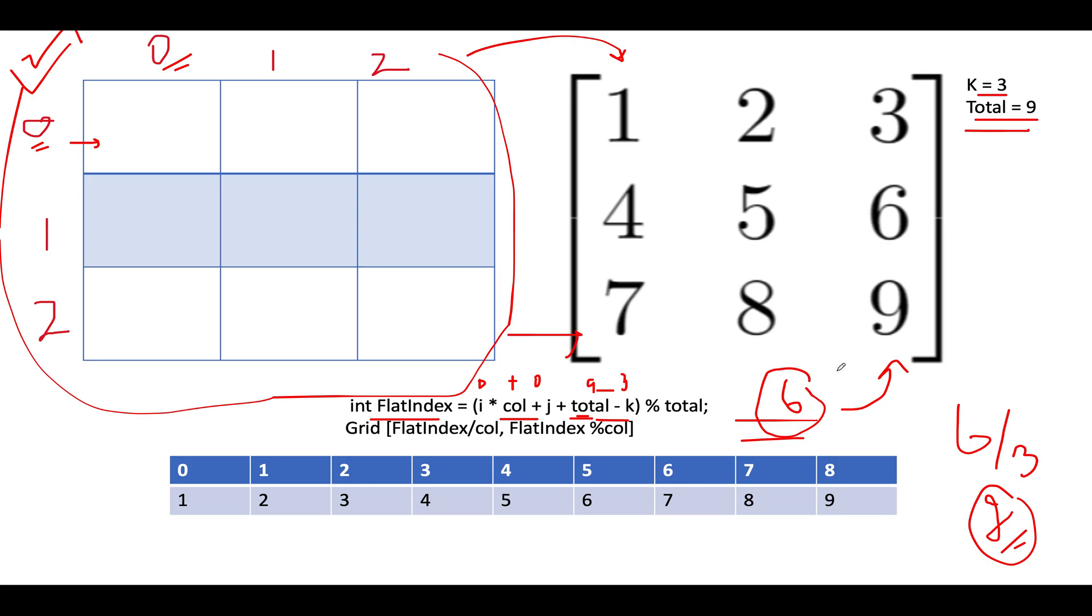So we go to the second row. And what would be the column there? 6 modulus 3. What do you get? You get 0. That means we should look out for the second row 0th column which is this one. As a result of which we should have 7 over here.